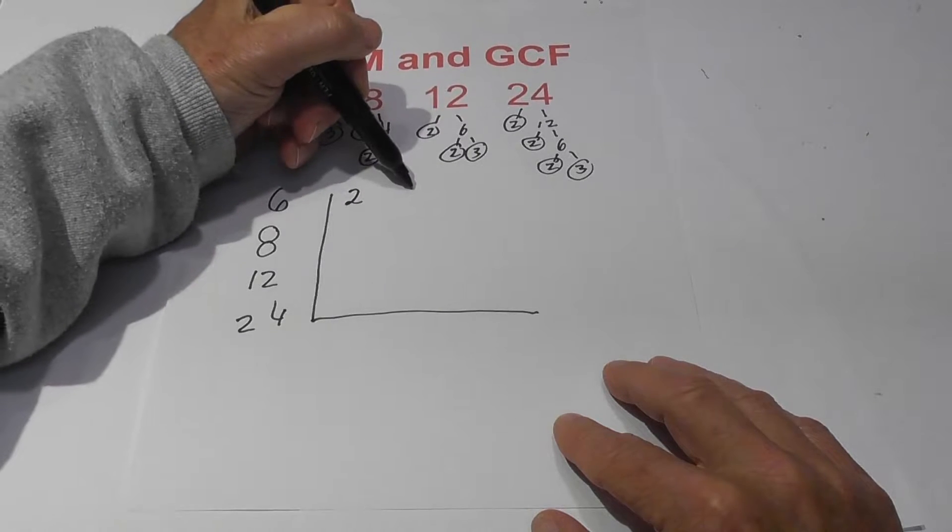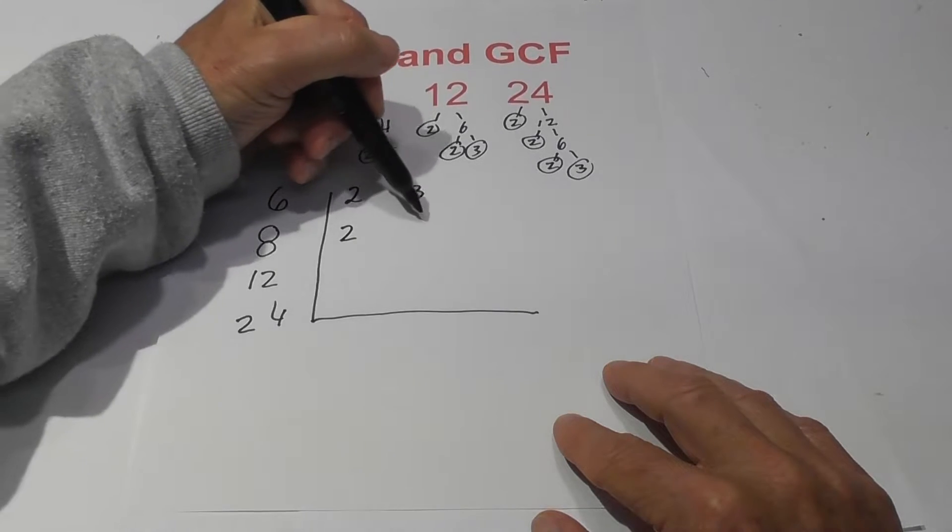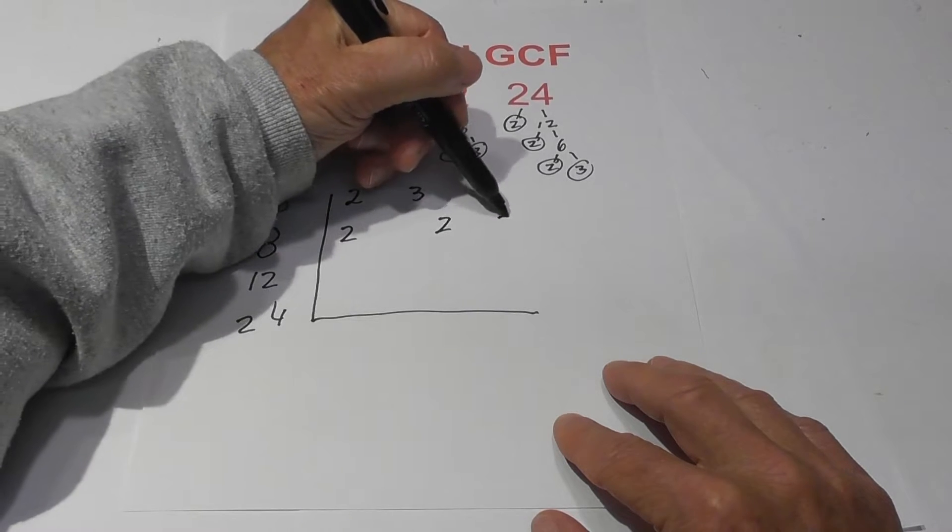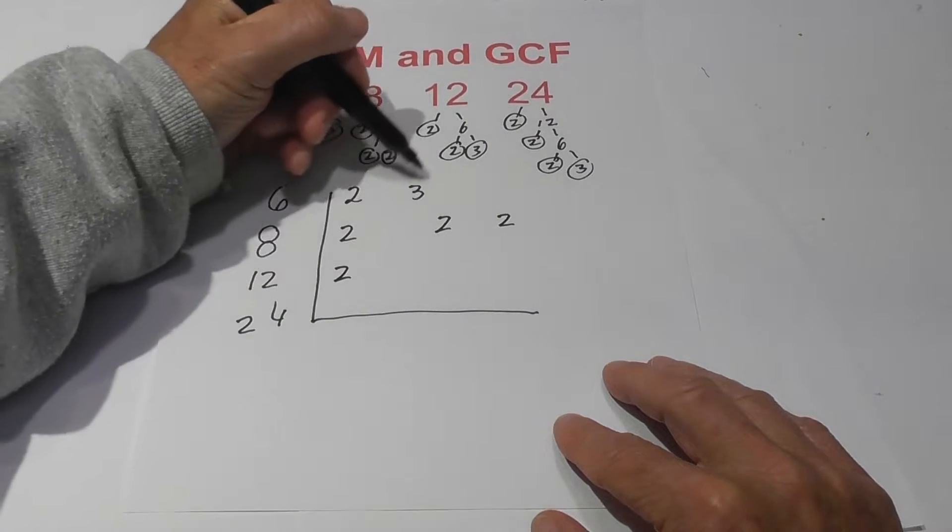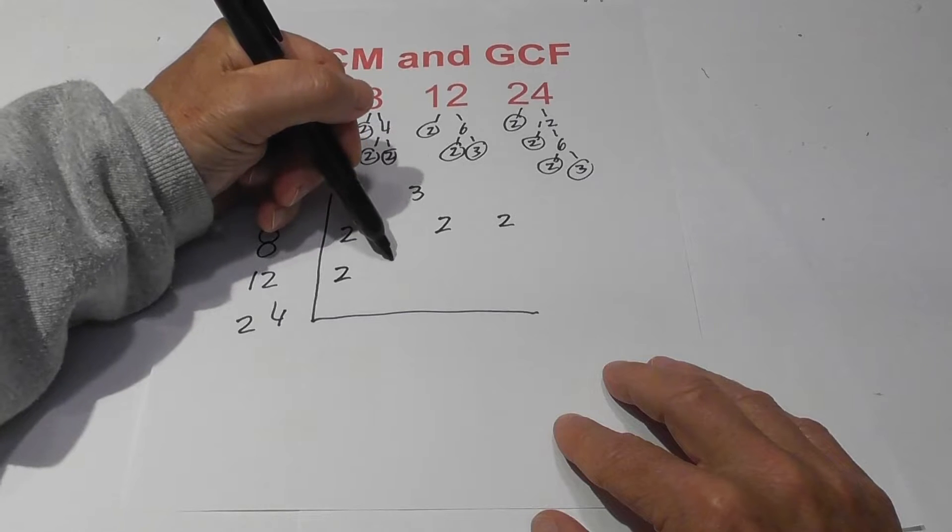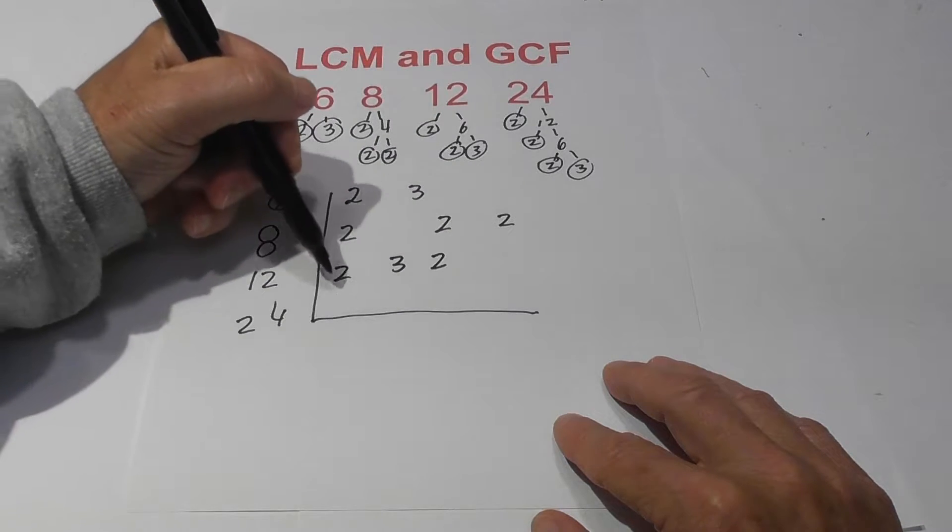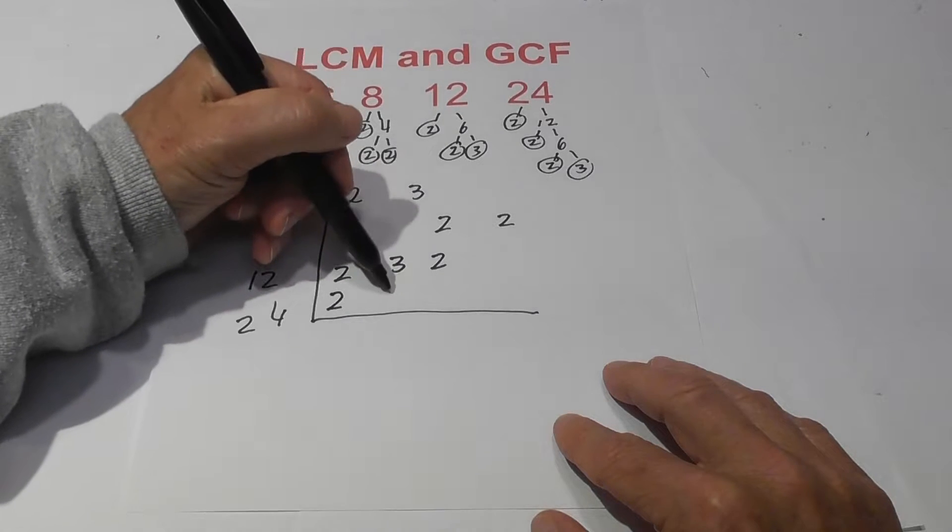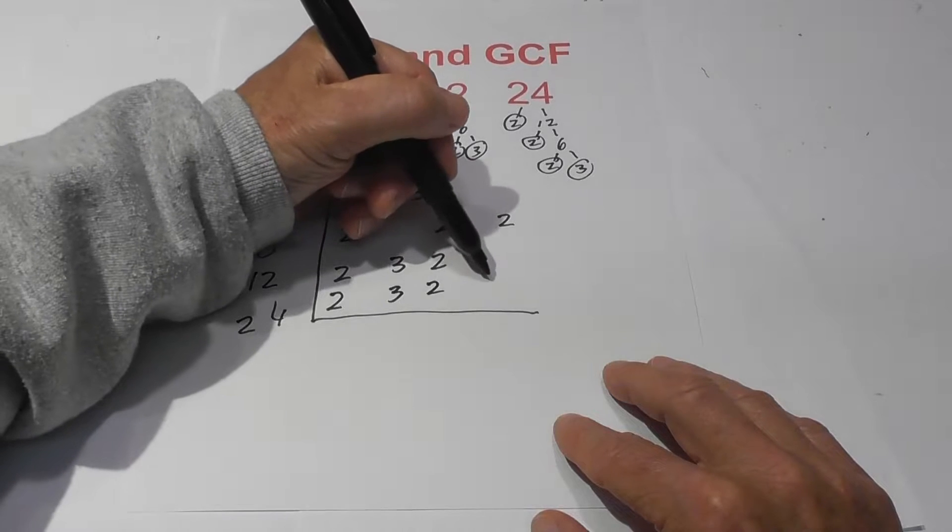So I'm going to write the six. We've got a two and a three. For eight, two. I'm going to skip the three. You'll see why in just a second. For the twelve, I'm going to write the two. I'm going to go ahead and write this three right here and then the other two. And then for twenty-four, I've got two, I've got three, and it helps to keep the columns nice and neat, two and two.